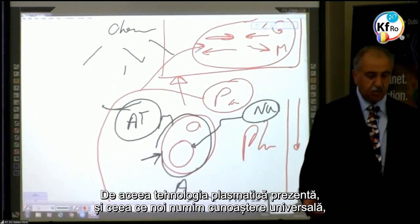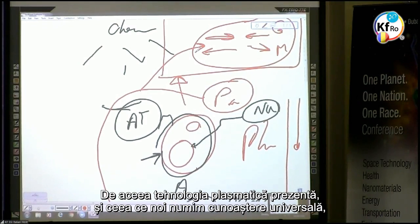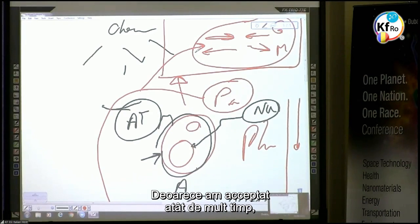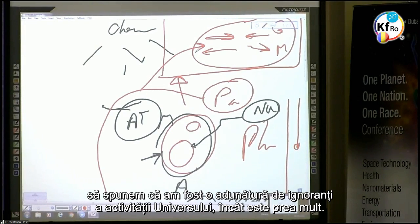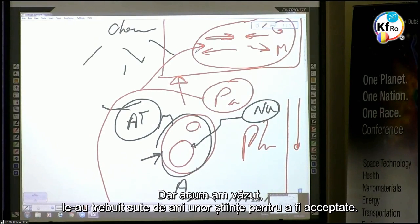This is why the present plasma technology and what we call the universal knowledge is in such a mayhem with the new world of life and technology and science. Because we have accepted so much that to say we've been a bunch of ignorance of the work of the universe is too much. So we create oppositions, we create, there is something wrong with it. But now we have seen, it's taken hundreds of years for some sciences to be accepted.